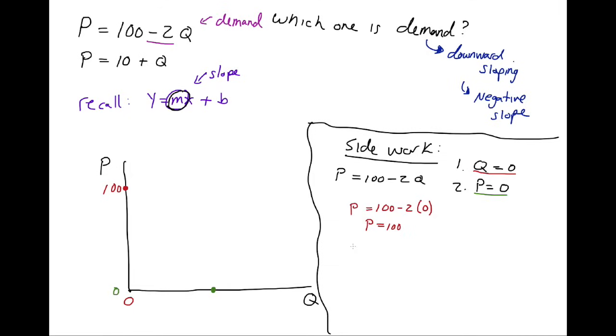And so if we look when P equals 0, that's going to be 0 equals 100 minus 2Q. Now I can solve for this by adding 2Q to both sides. 2Q equals 100. And then divide both sides by 2, I get Q equal to 50.